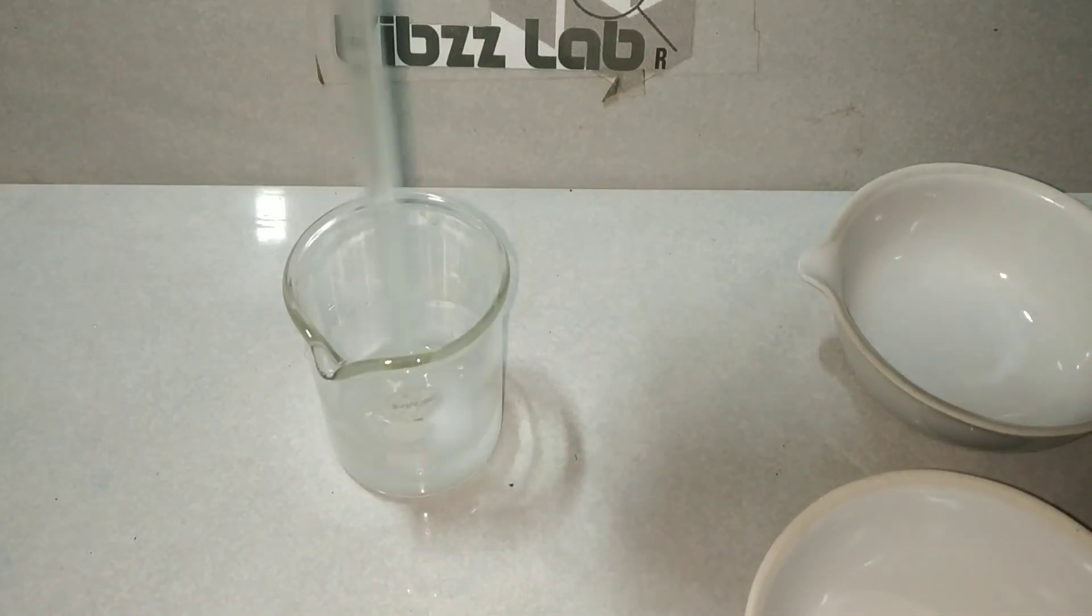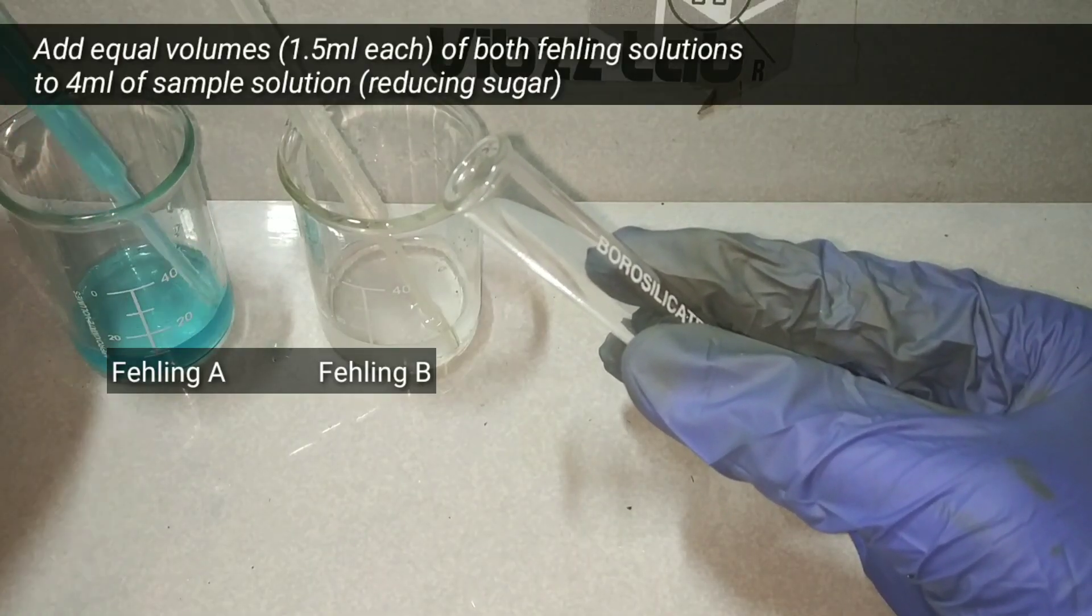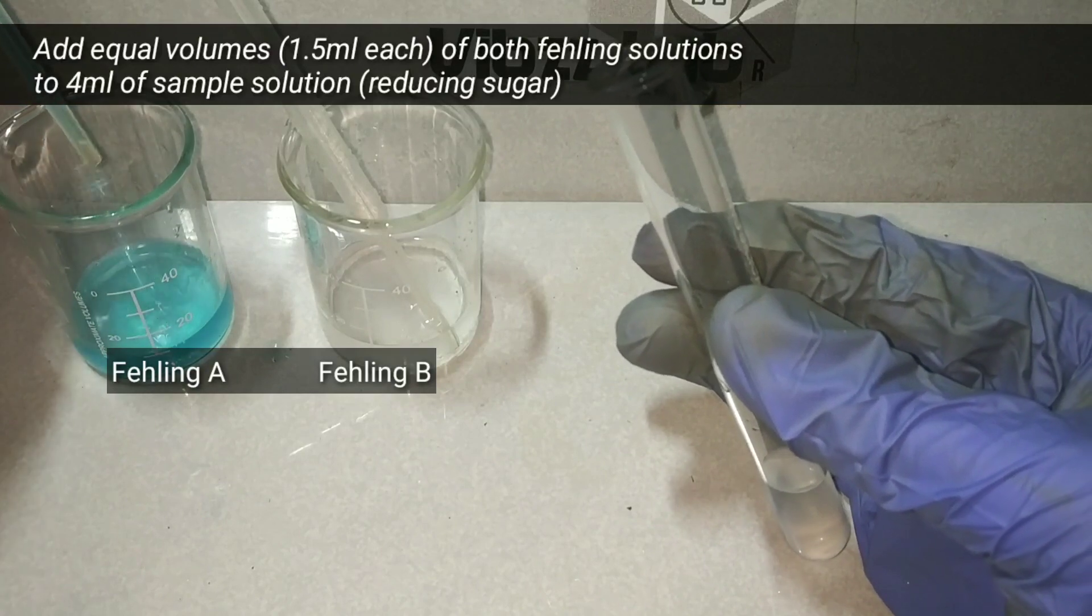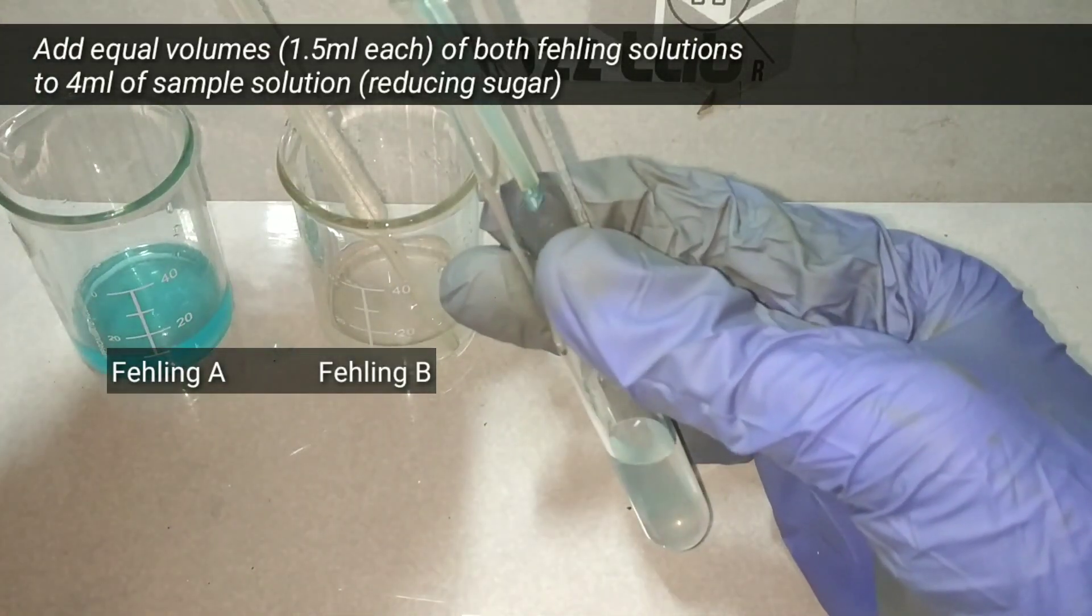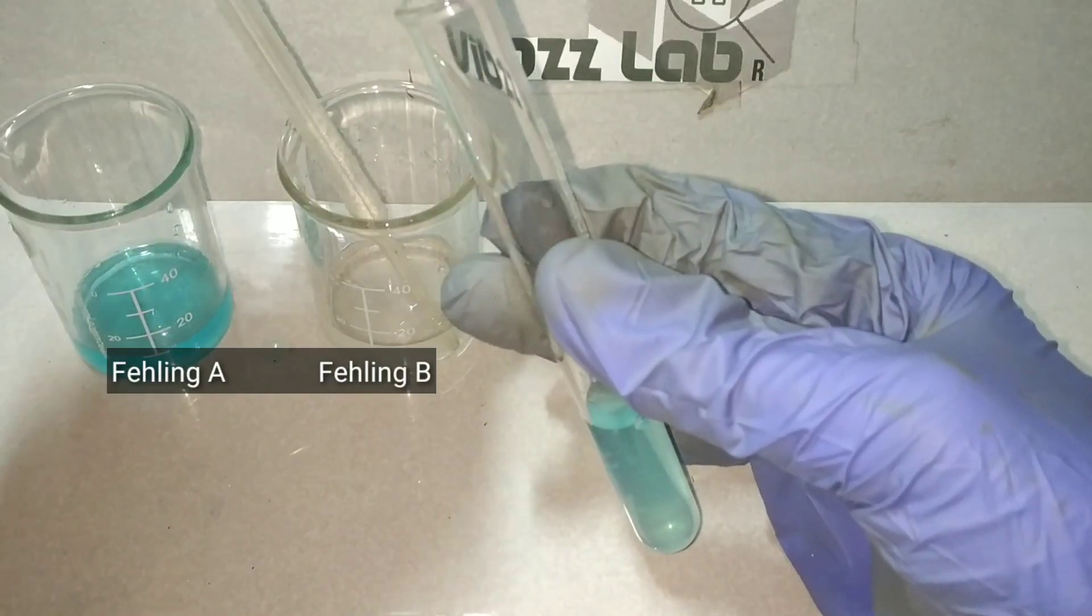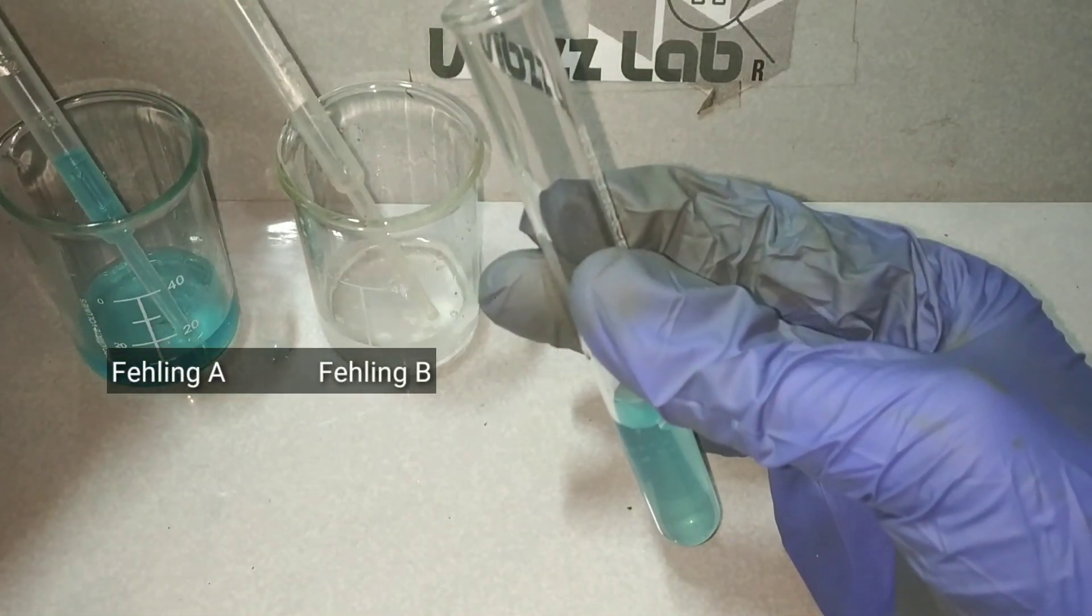After mixing the solution well, we have the Fehling reagent B. Now let us do the Fehling test. We have taken 4 ml of the sample solution, which is a reducing sugar, in a test tube and we add equal volumes of both Fehling reagent A and B into it. I am using 1.5 ml of the reagent.